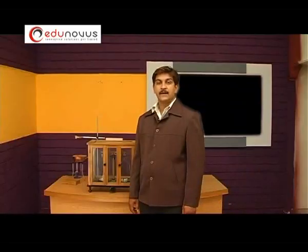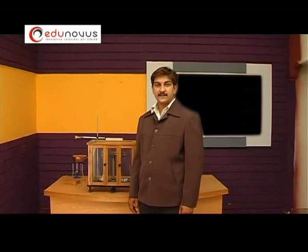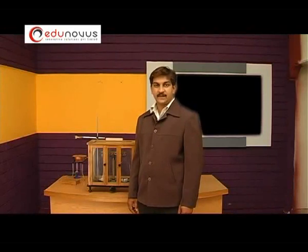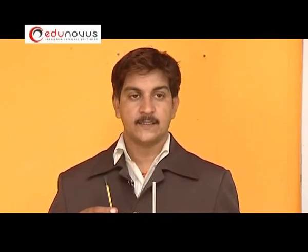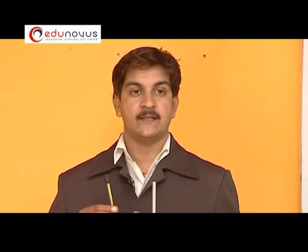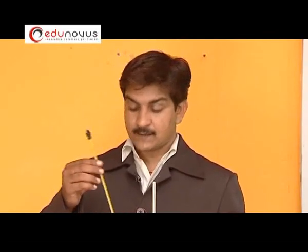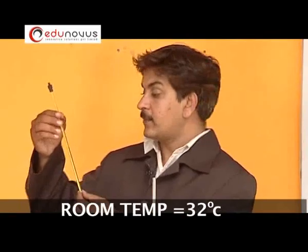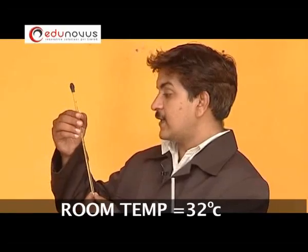The mass of the given liquid with the specific gravity bottle is 36 grams 350 milligrams. Now we have to record the room temperature using a thermometer. The room temperature is 32 degrees centigrade.